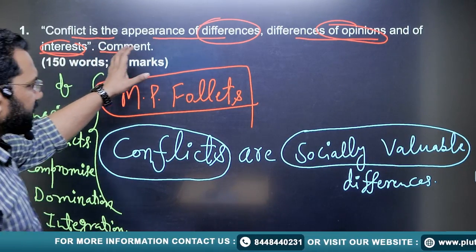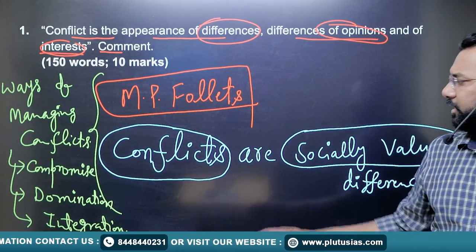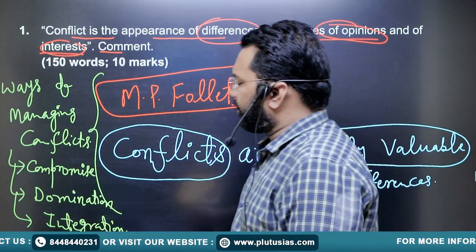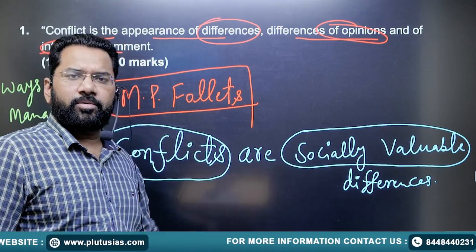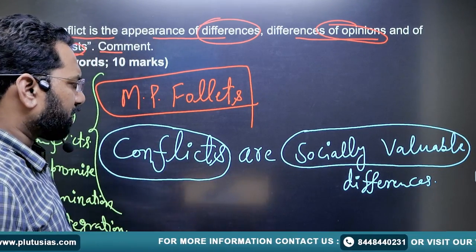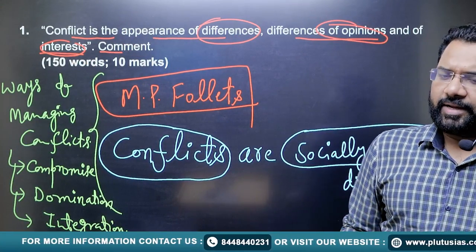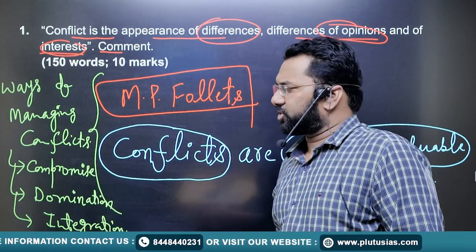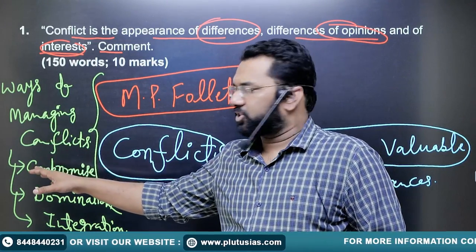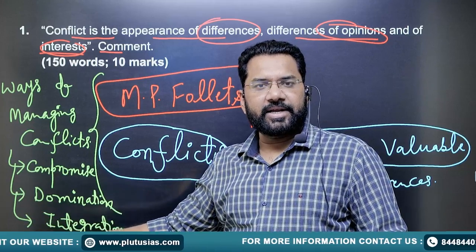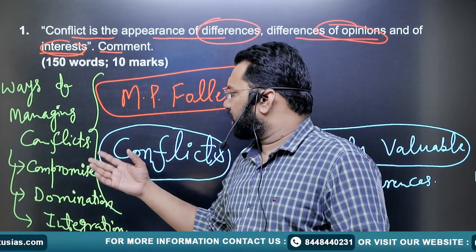So first you are explaining what conflicts are and how they are arising. Then you are adding Mary Parker Follett's views — that conflicts are socially valuable differences and not always destructive, but it is the manner which decides whether they will be destructive or constructive. Then she suggested the threefold strategy: compromise, domination, and integration to resolve the conflict.